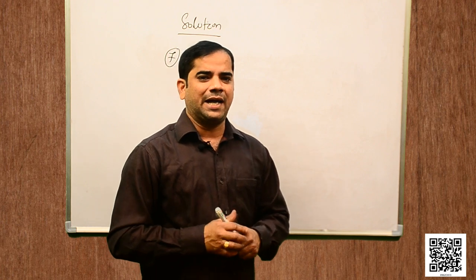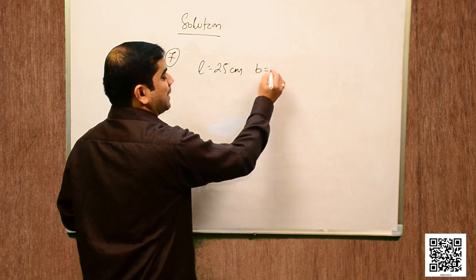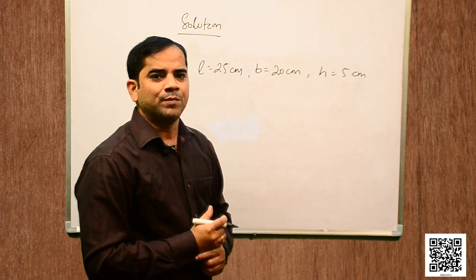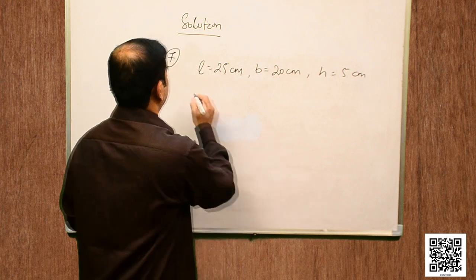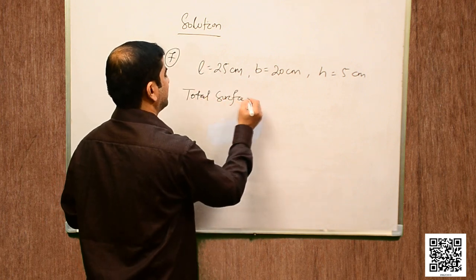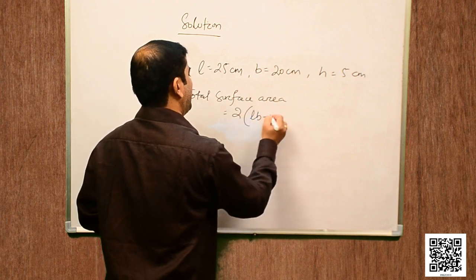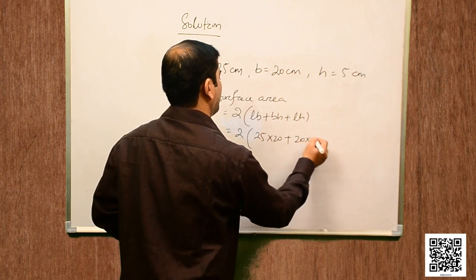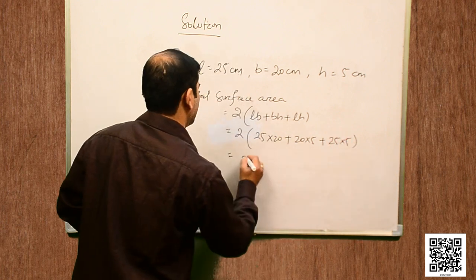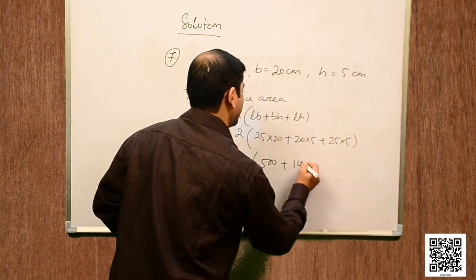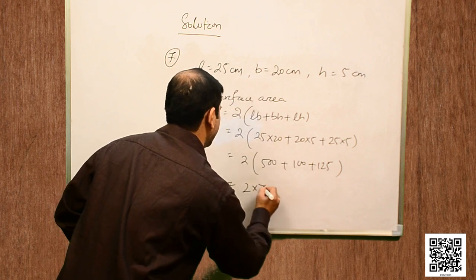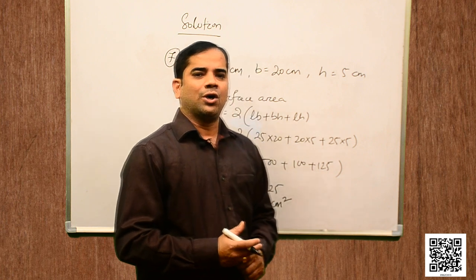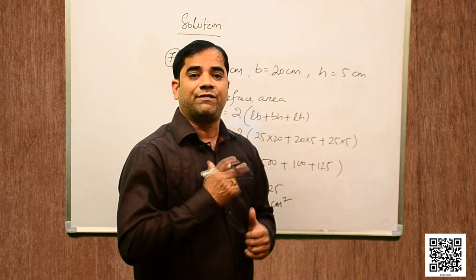The dimensions for the bigger box are: length = 25 cm, breadth = 20 cm, and height = 5 cm. Total surface area = 2(lb + bh + lh) = 2(25×20 + 20×5 + 25×5) = 2(500 + 100 + 125) = 2 × 725 = 1450 cm².